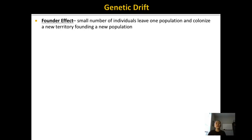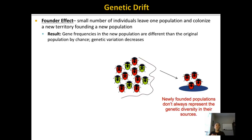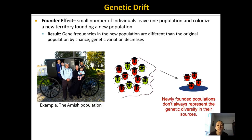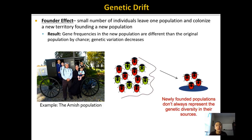Another example of genetic drift is the founder effect, where a small number of individuals leave one population and colonize a new territory. The gene frequencies in the new population are likely different from the original just by chance. An example is the Amish population in the United States, which originated from just a few couples from Europe. By chance, those founders carried genes for polydactyly — having more than 10 fingers — so we see a higher frequency of that trait in the Amish population today.